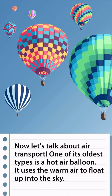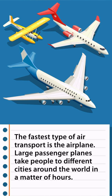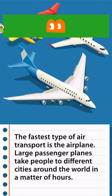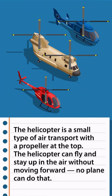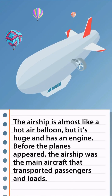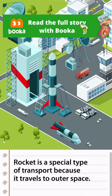Now let's talk about air transport. One of its oldest types is a hot air balloon, which uses warm air to float up into the sky. The fastest type is the airplane — large passenger planes take people to different cities around the world in hours. The helicopter is a small type with a propeller on top; it can stay up in the air without moving forward. The airship is like a huge hot air balloon with an engine — before planes appeared, it was the main aircraft for passengers and cargo. A rocket is a special type of transport because it travels to outer space.